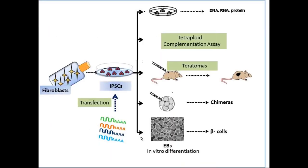Once you get the iPSC lines, you have to characterize them at the mRNA level and at the protein level. At the mRNA level you use stringent markers and run a gel to see expression of molecules like Oct4, Nanog, Klf4, Sox2, etc. Then you do immunoprotein studies to see whether gene expression is translated into those proteins as well.